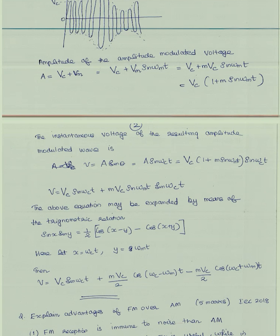The instantaneous voltage of the resulting amplitude is Vm sin(ωm·t). The modulation index m = Vm/Vc, so Vm = m·Vc. This gives Vc + m·Vc sin(ωm·t), which equals Vc into [1 + m sin(ωm·t)]. The instantaneous voltage of the resulting amplitude modulated wave is v = A sin(θ), where θ = A sin(ωc·t).